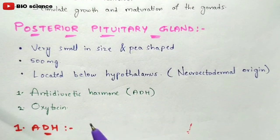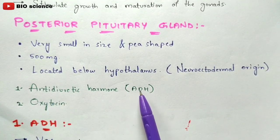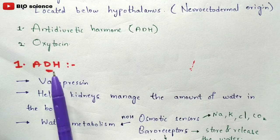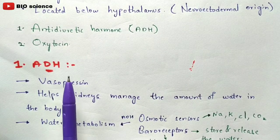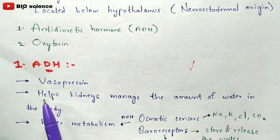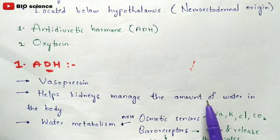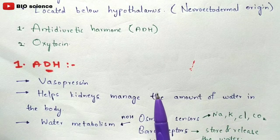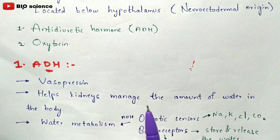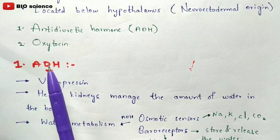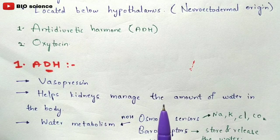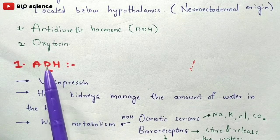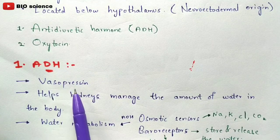The posterior pituitary gland secretes only two hormones: anti-diuretic hormone (ADH) and oxytocin. ADH is also called vasopressin. It mainly helps the kidneys manage the amount of water present in the body — this water balancing process is called water metabolism. Two key sensors involved are osmotic sensors and baroreceptors, which interact with ADH to perform water metabolism.